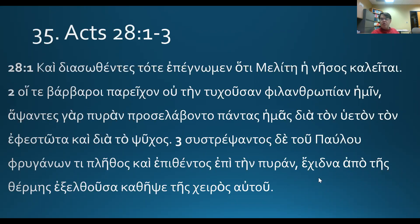A viper — echidna — from the heat having come out, latched onto his hand. Active females carry '-uzi,' so this is an aorist active participle, nominative feminine singular. A viper having come upon him from the heat, latched upon his hand. 'C' is the key to the hidden sigma, so we have a hidden sigma epsilon — a third person singular past tense ending. This is cathopto, related to hapto up here — latched upon his hand. Aorist active indicative third singular.